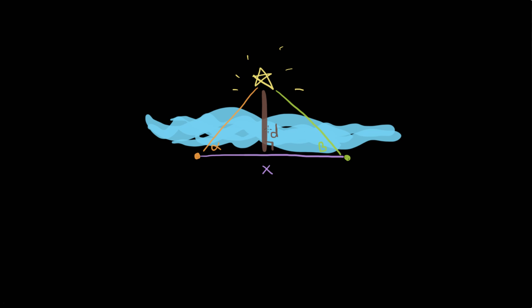How do you figure out the distance d? In mathematical terms: given two angles and a baseline, can you find the altitude of an arbitrary triangle? The answer is yes — we call this triangulation. It's commonly used in science and mathematics, and today we're going to figure out this distance using trigonometry. First, we need to know some trigonometry basics.